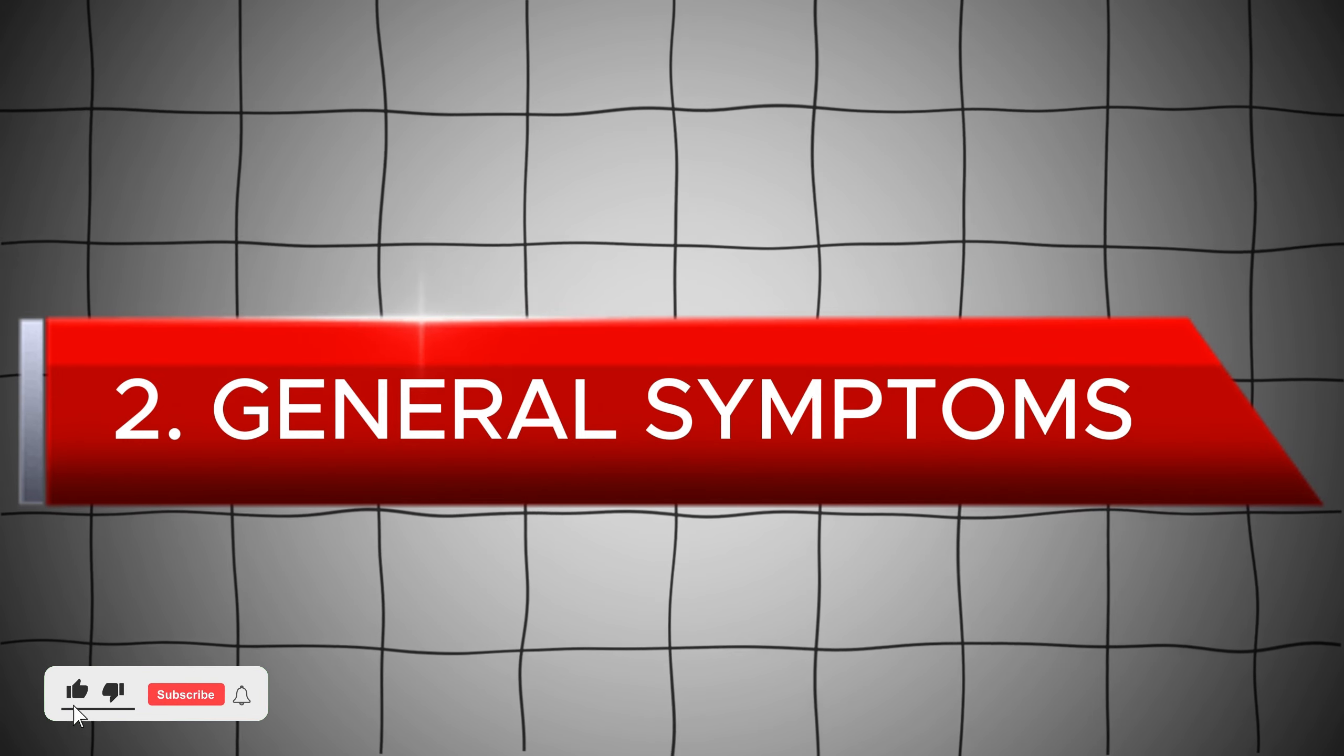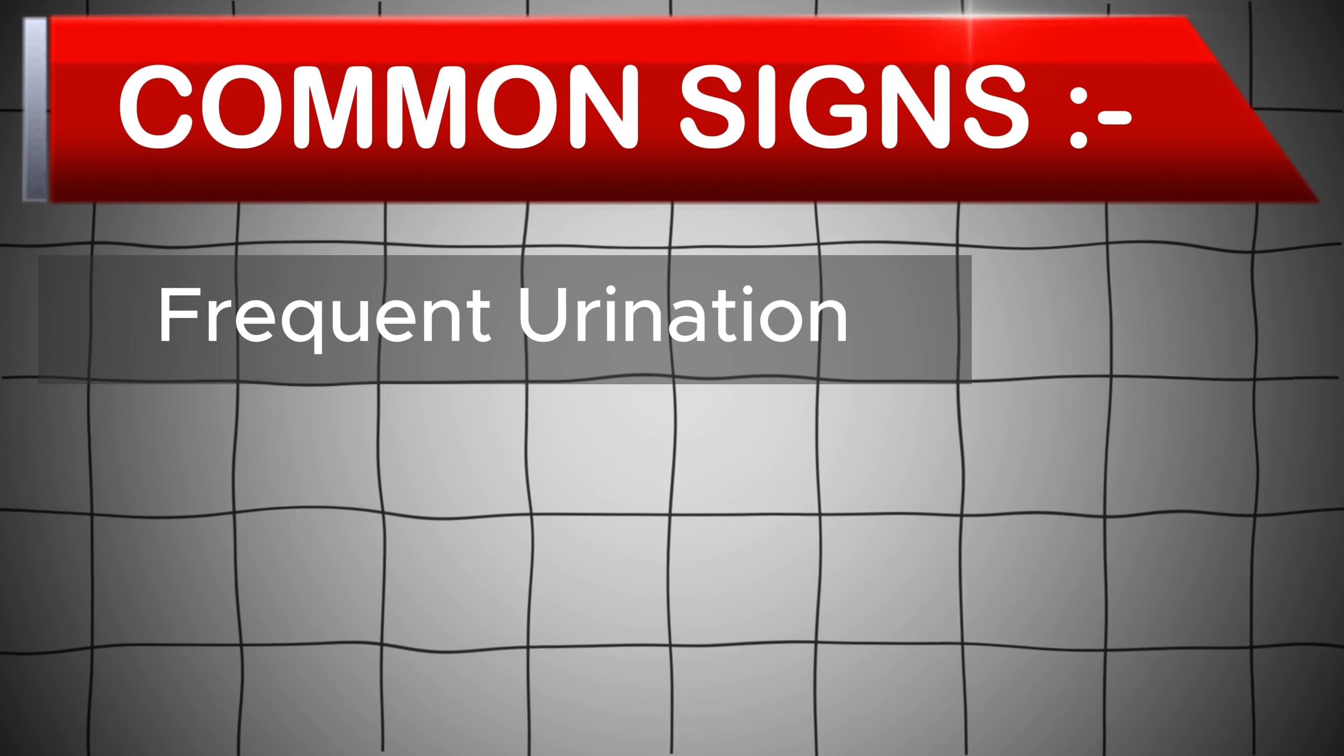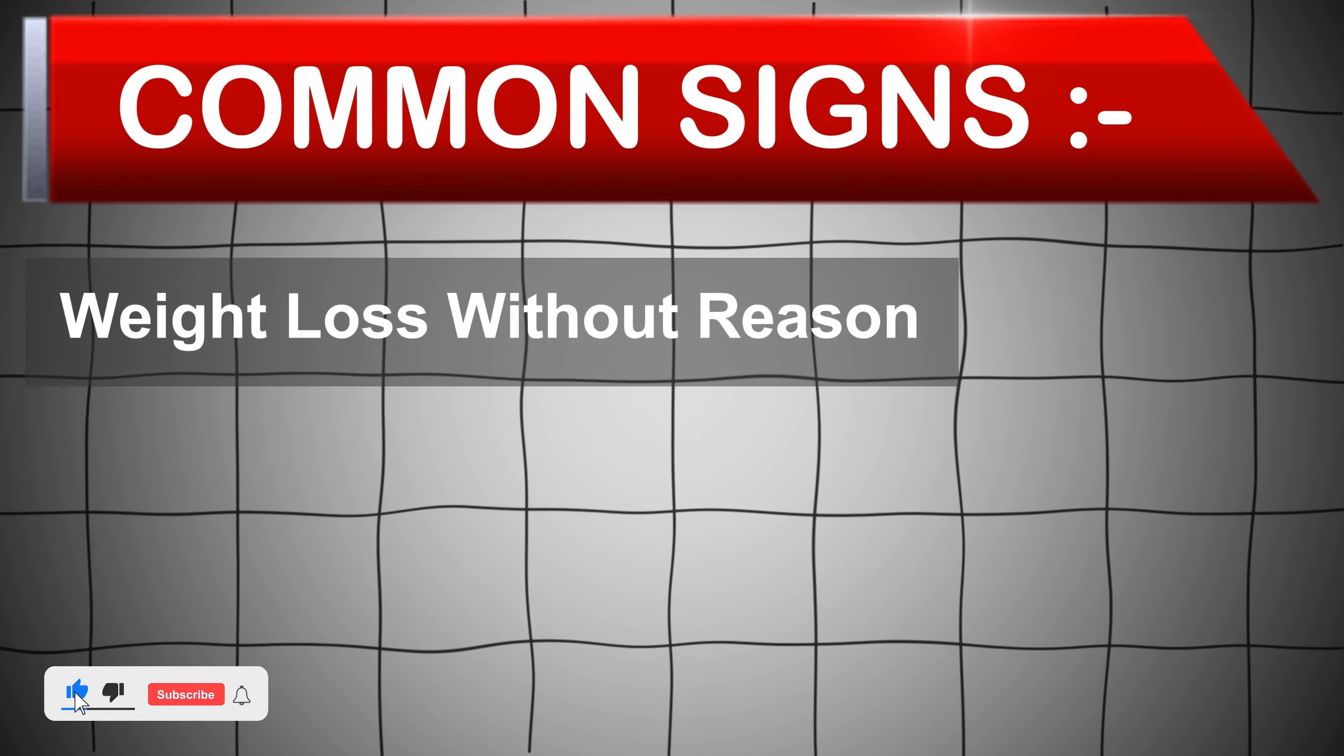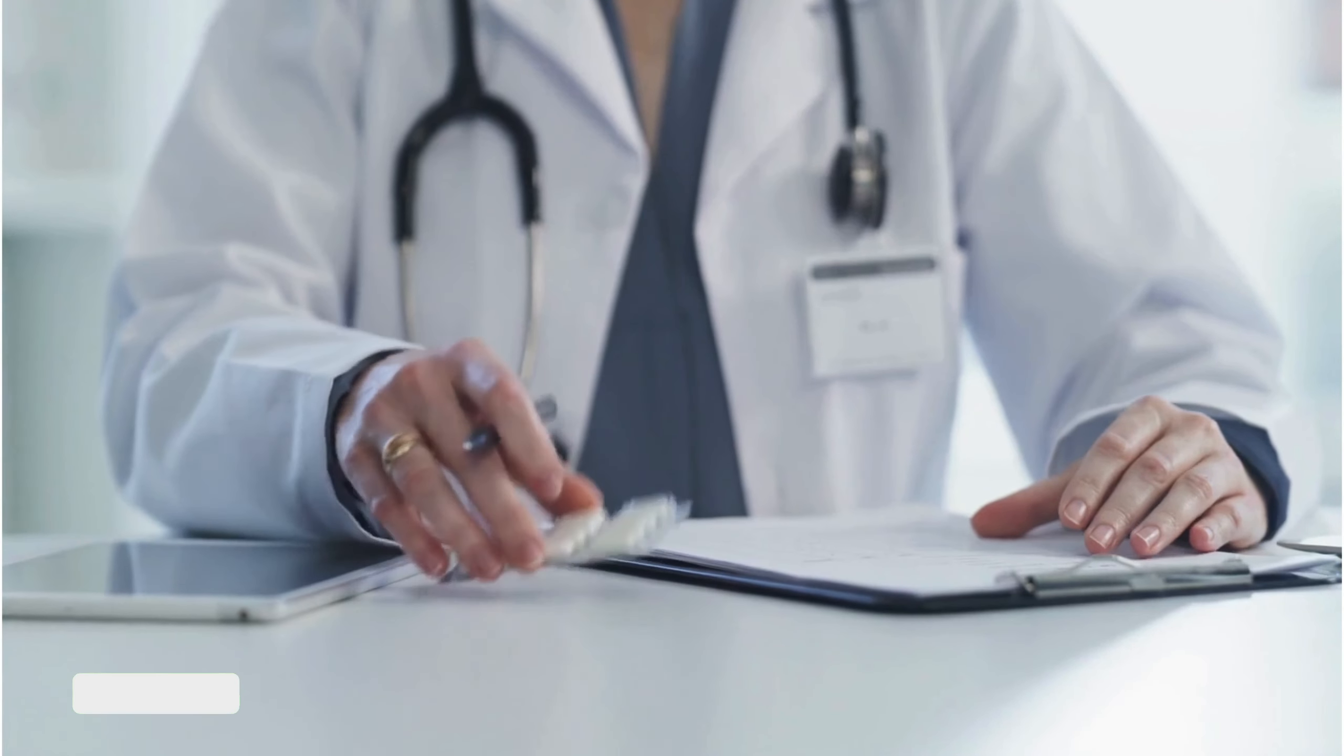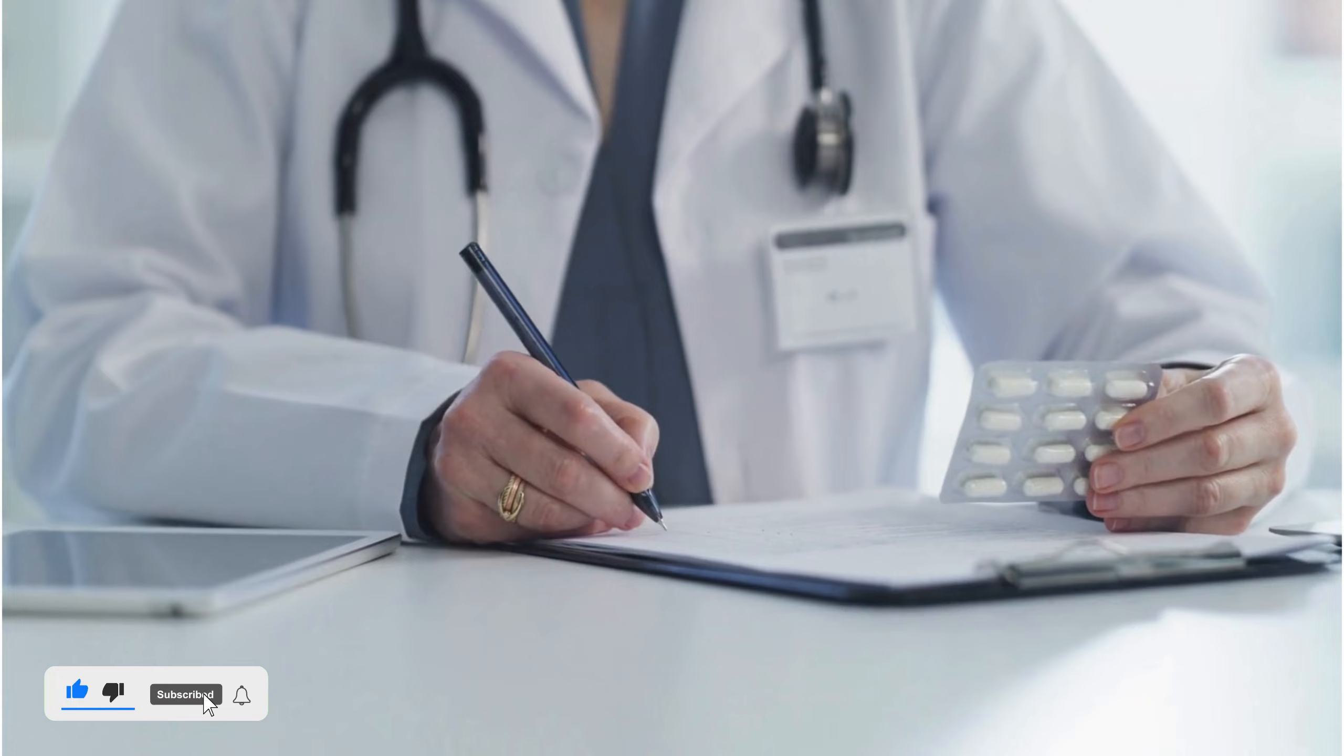General symptoms. The symptoms of diabetes can be varied, but common signs include frequent urination, excessive thirst, excessive hunger, weight loss without reason, fatigue, and blurred vision. If you experience any of these symptoms, it's essential to contact a healthcare professional for the correct diagnosis.